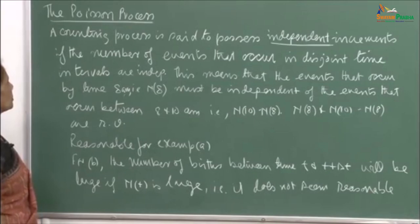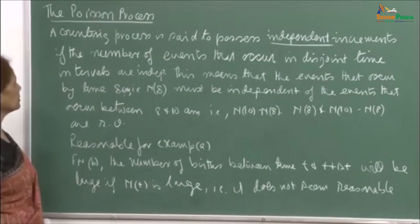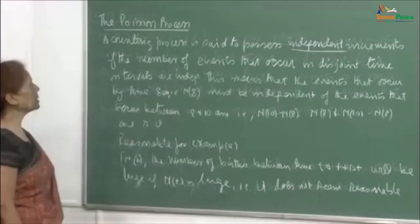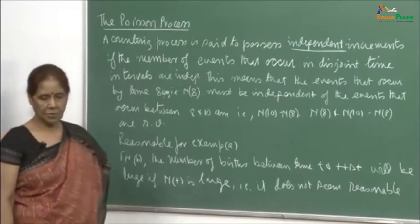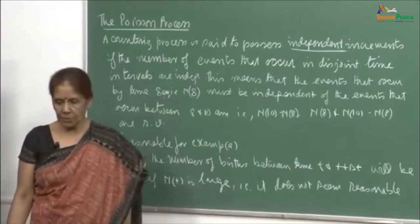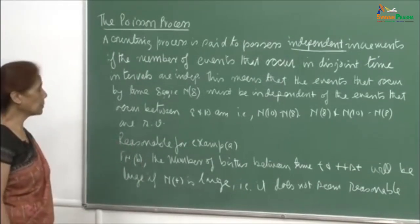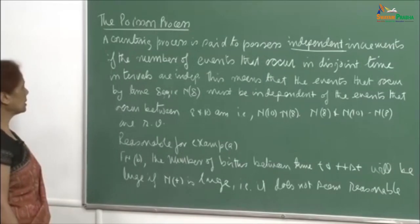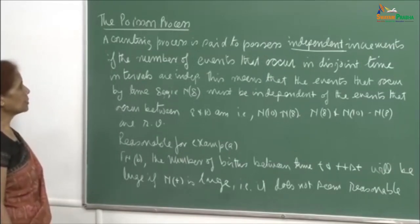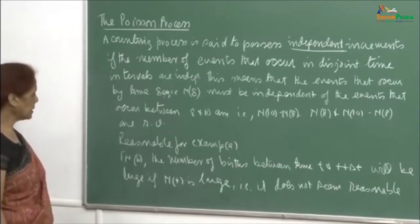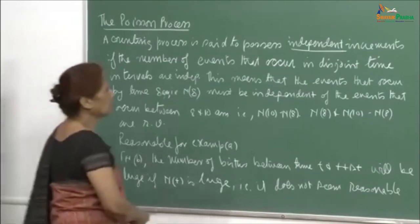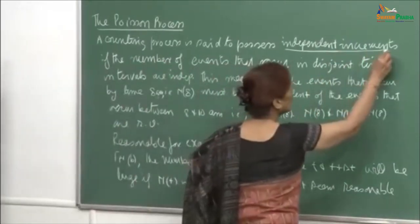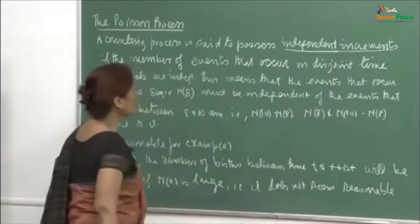While talking of the Poisson process, I said we have to first talk about a counting process. We said that there should be some norms that have to be followed for the counting process. The first one is that it should have independent increments.